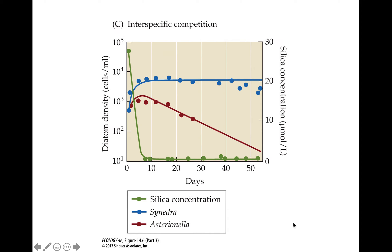What happens when we put them both together? Synedra reduced silica concentrations to lower levels than Asterionella, and therefore Synedra outcompeted Asterionella when grown together. You can see that the red line — Asterionella — was driven to extinction.